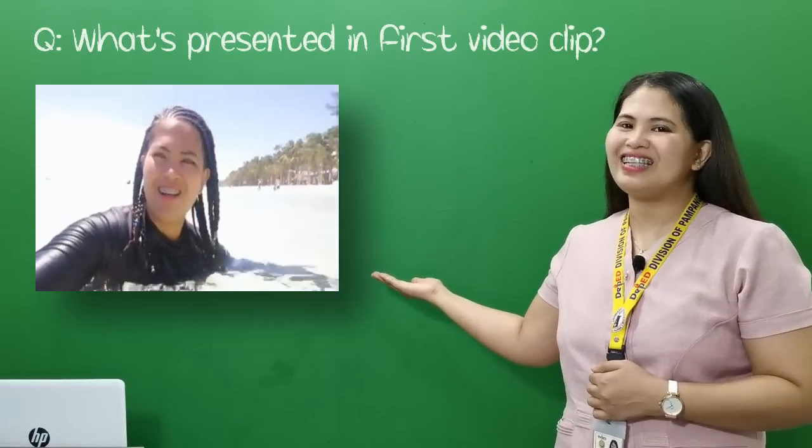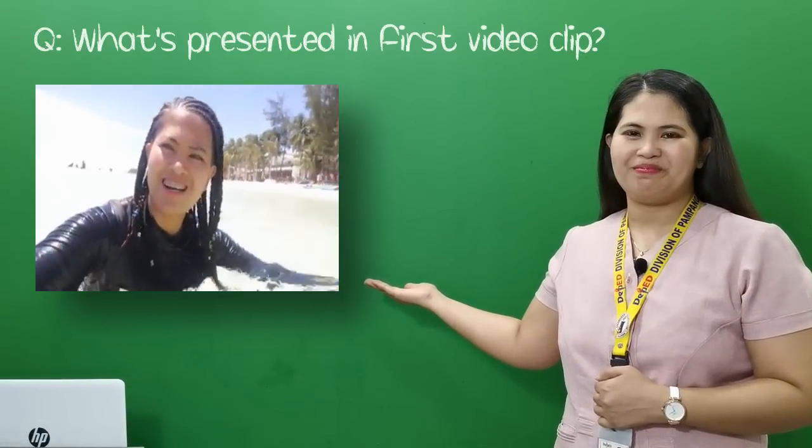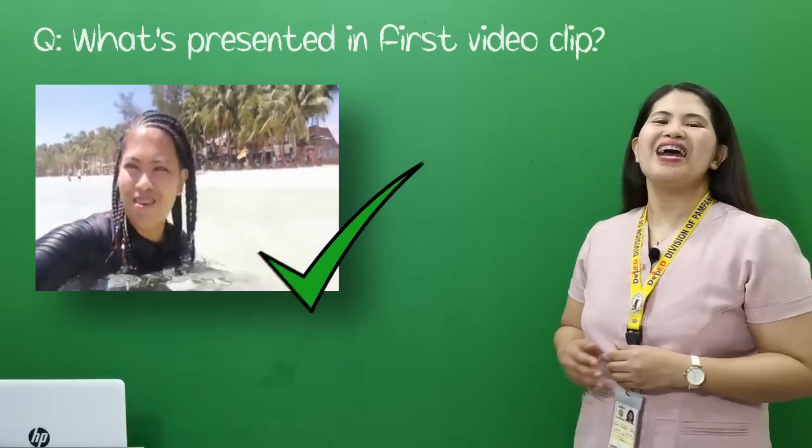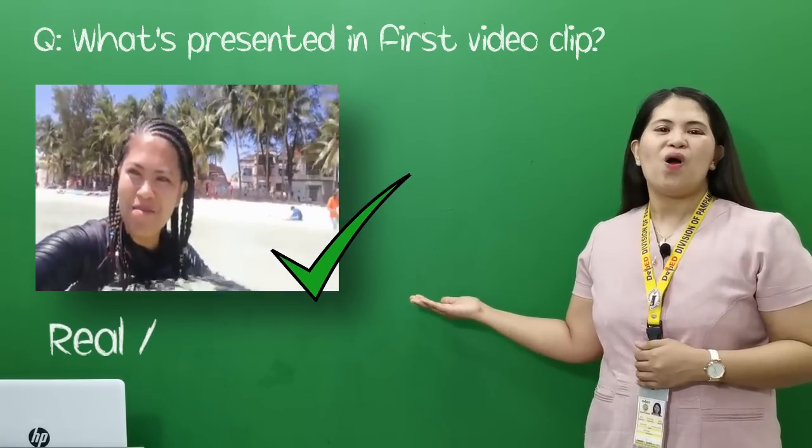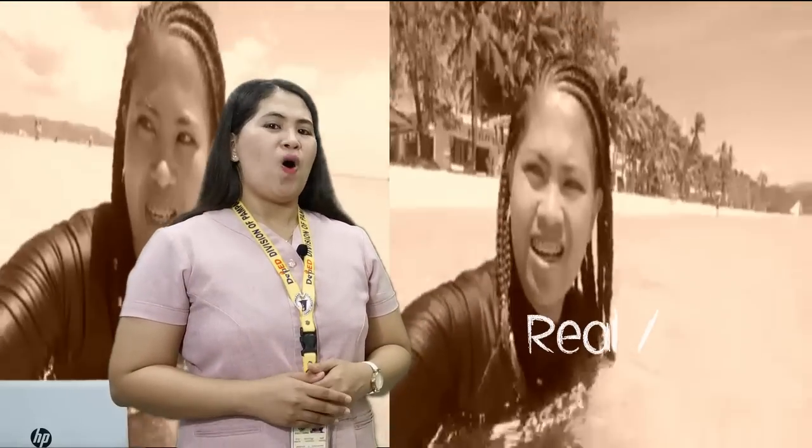What's presented in the first video clip? You're correct — it is real or believable. In the first clip, that is me in Boracay, singing while enjoying the water. Therefore, it is real or believable.